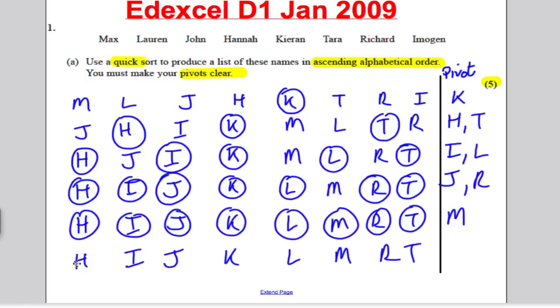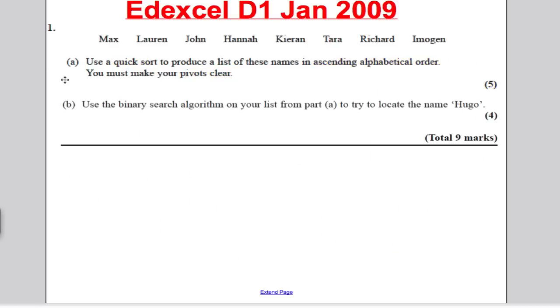Here's a list and it asks you to use a quick sort to put them in alphabetical order. I've already done this question in the video on past paper question three, so I'm just going to show the answers here. The answers for this were clearly Hannah, Imogen, John, Kieran, Lauren, Max, Richard, and finally Tara. They were in order. Look at my previous video to see how I got the answers to that. I'm going to focus here on the binary search part, because for a binary search you need to be in alphabetical order. We're trying to locate the name Hugo.